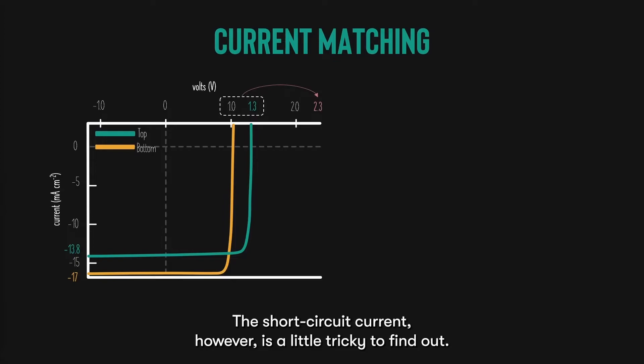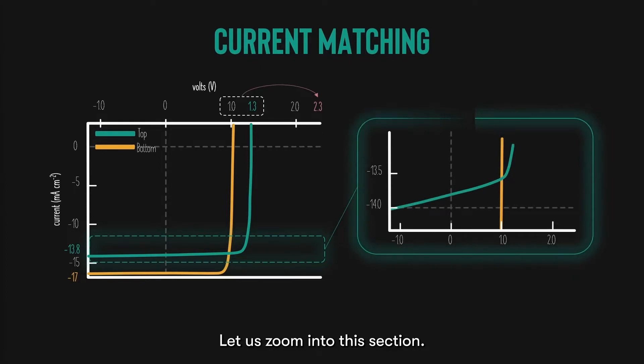The short circuit current, however, is a little tricky to find out. Let's zoom into this section. You see, we know that short circuit current happens when open circuit voltage is zero. Hence, it's somewhere along this line. For the open circuit voltage of the multi-junction cell to be zero, the top cell voltage has to cancel out the bottom cell voltage. This can only happen at this point, where the top cell has a voltage of negative 1 volt, and the bottom cell has a voltage of 1 volt, effectively cancelling out each other.